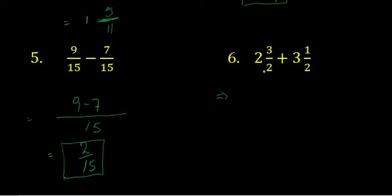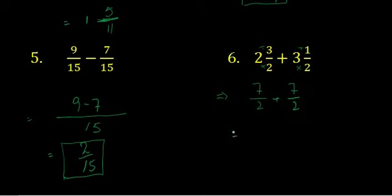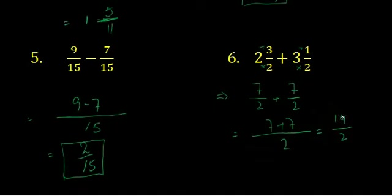Question number 6 is quite different because it is in mixed fraction form. First we convert the mixed fractions into simple fractions by multiplying and adding. So: 2 multiplied by 2 is 4, plus 3 becomes 7 — giving 7 upon 2. And 2 multiplied by 3 is 6, plus 1 is 7 — giving 7 upon 2. Now the denominator is the same, so we write 2 once and add 7 plus 7 to get 14 upon 2. We can divide by 2: 2 sevens are 14. The answer is 7 upon 1, or simply 7.